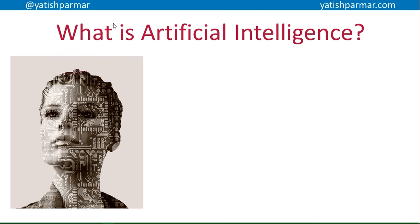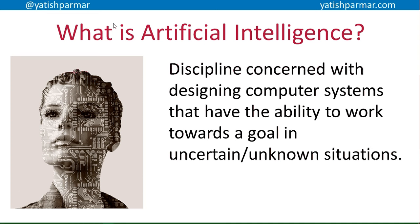So in that context, what is artificial intelligence? Computers pretty much only do what we tell them to do — you have an algorithm, the computer follows the algorithm, produces some output. Take it out of that context, can the computer fulfill some form of function? Artificial intelligence is a discipline concerned with designing computer systems that have the ability to work towards a goal in an unknown or uncertain situation. You feed it data and it needs to figure out what to do to resolve the situation.